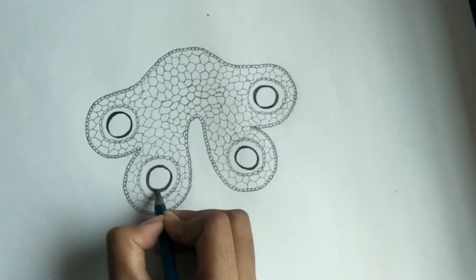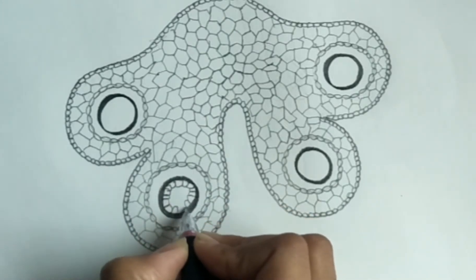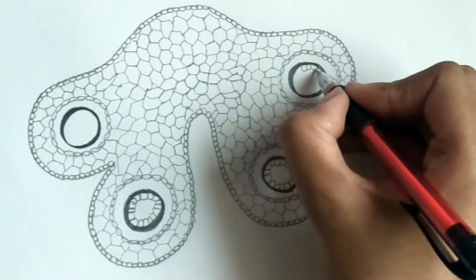This layer is the tapetum with tapetal cells that provides nourishment for the developing microspores.